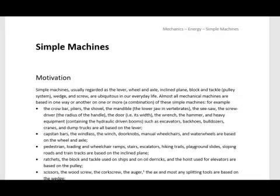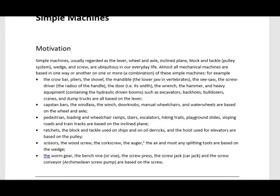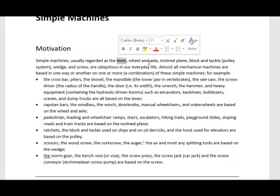This is the lab on simple machines. As you see from the motivation here, the six bullet points show the lever, the wheel and axle, incline plane, block and tackle, wedge and screw. These are the classical simple machines.